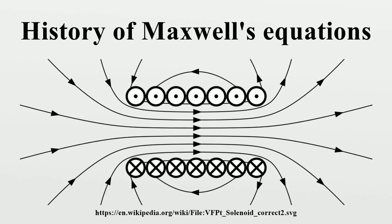The four modern Maxwell's equations can be found individually throughout his 1861 paper, derived theoretically using a molecular vortex model of Michael Faraday's lines of force, and in conjunction with the experimental results of Weber and Kohlrausch. But it wasn't until 1884 that Oliver Heaviside, concurrently with similar work by Josiah Willard Gibbs and Heinrich Hertz, grouped the twenty equations together into a set of only four via vector notation. This group of four equations was known variously as the Hertz-Heaviside equations and the Maxwell-Hertz equations, but are now universally known as Maxwell's equations.